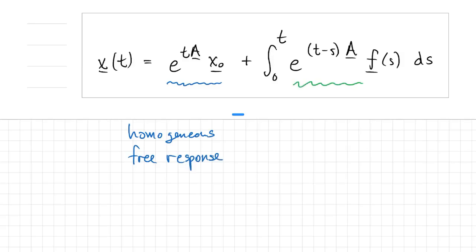The integrand is actually an impulse response. The impulse amount is f of s, and then that's evolved using the exponential from time s to t.